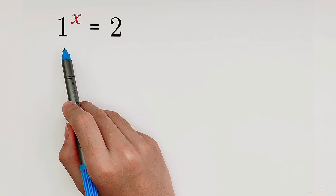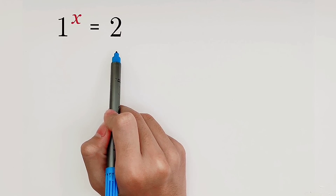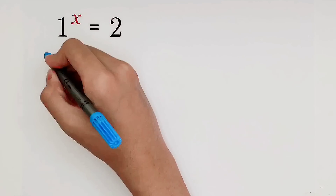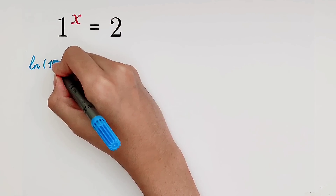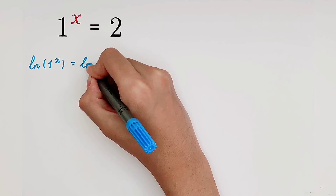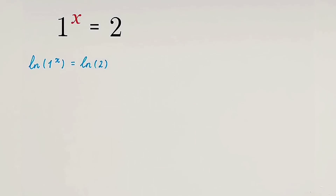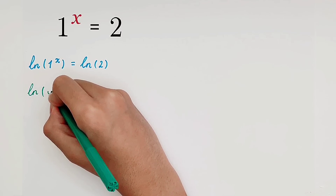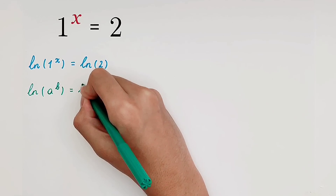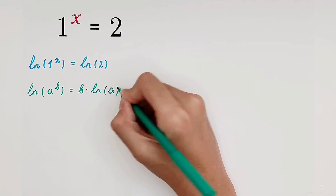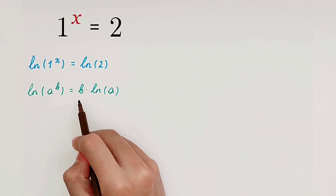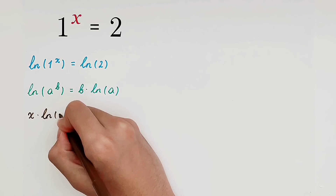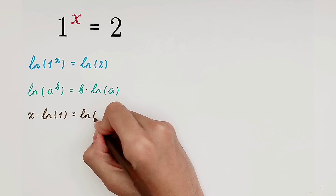Since x is the exponent, we can take a natural log on both sides using logarithms. The natural log is ln. The natural log of the left-hand side is equal to the natural log of 2. We can use the formula: the natural log of a to the power of b is equal to b times the natural log of a. So this x jumps out, giving us x times the natural log of 1 is equal to the natural log of 2.